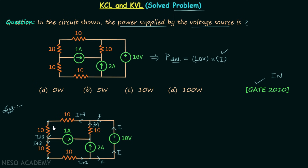Now we have currents in all different branches and we can apply KVL. We will choose the outer loop. The outer loop is selected because if you select any other loop you have to include one or two current sources, and since we don't know the voltage across those sources, we will try not to include them — hence we select the outer loop.